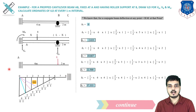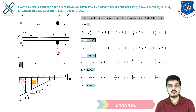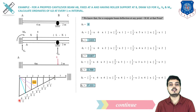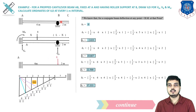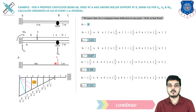Here I have converted the beam: fixed end becomes free and free end becomes fixed for the conjugate beam. The unit load acts at 6 meters, so from 6 meters our bending moment diagram is drawn. 1 × 6 = 6. At every 1 meter interval: 1×1=1, 1×2=2, 3, 4, 5, and 6.